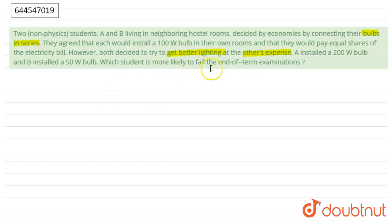A installed 200 watt bulb and B installed 50 watt bulb. So which student is more likely to fail the end of term exams? Okay, so in that condition...